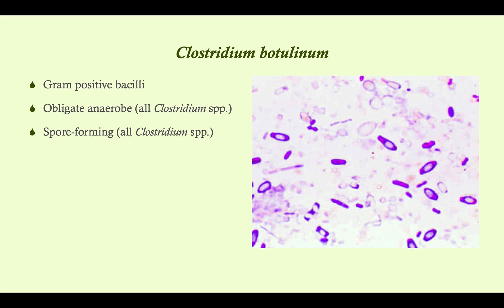All a spore is is bacterial hibernation. When conditions get really bad — it's too hot, or there's not enough food — the bacteria goes into hibernation, preserves its genome within the spore hull, and waits until conditions improve. Then it comes out of the spore, germinates, and can cause disease. We'll see why that's important when we talk about infantile botulism.